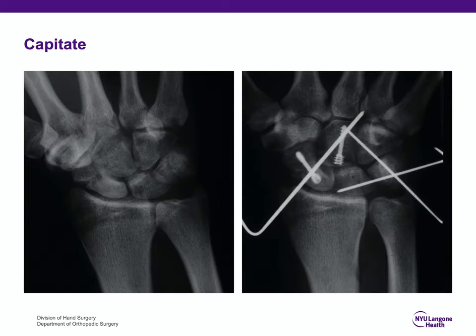This is an example of a patient treated previously with scaphocapitate syndrome where Herbert screws were used to fix the scaphoid waist fracture and the proximal capitate fracture, as well as some internal fixation with Kirschner wires for the associated perilunate instability.